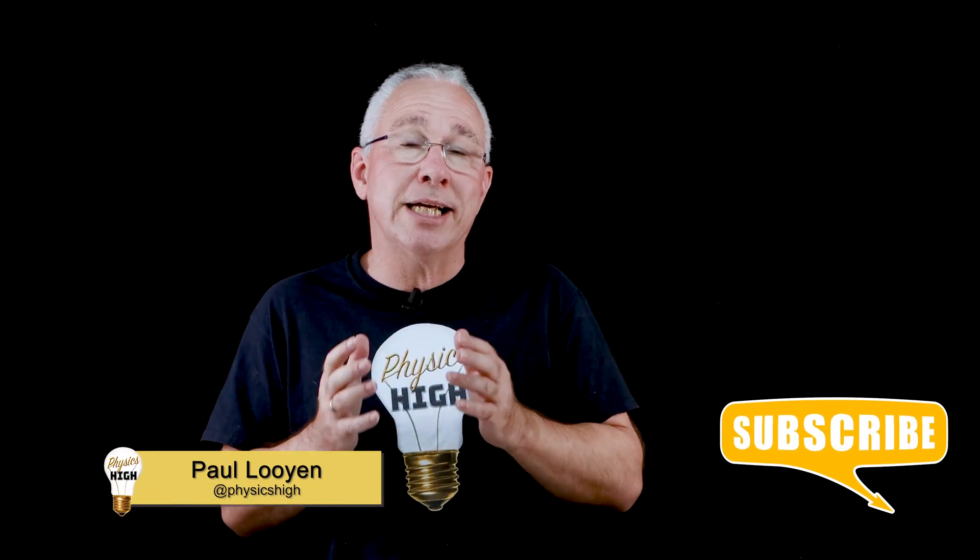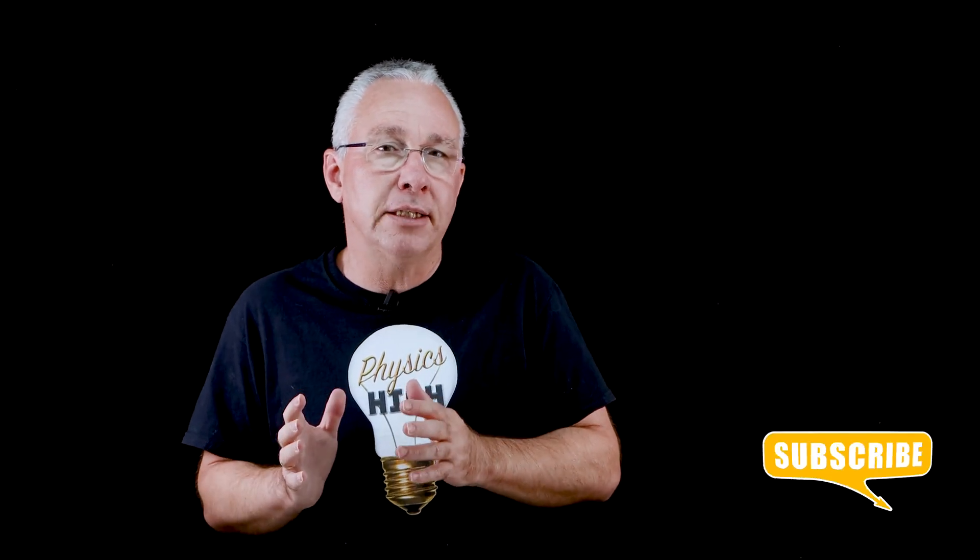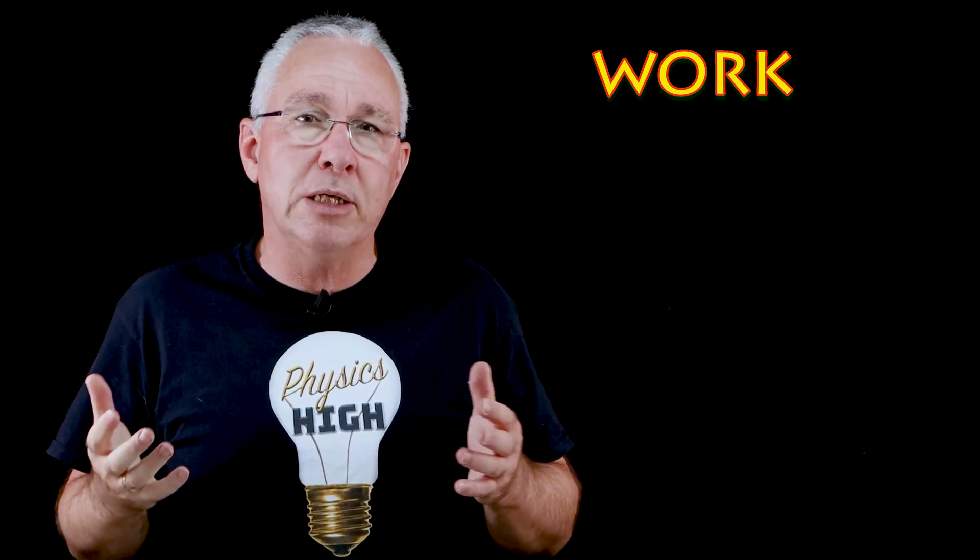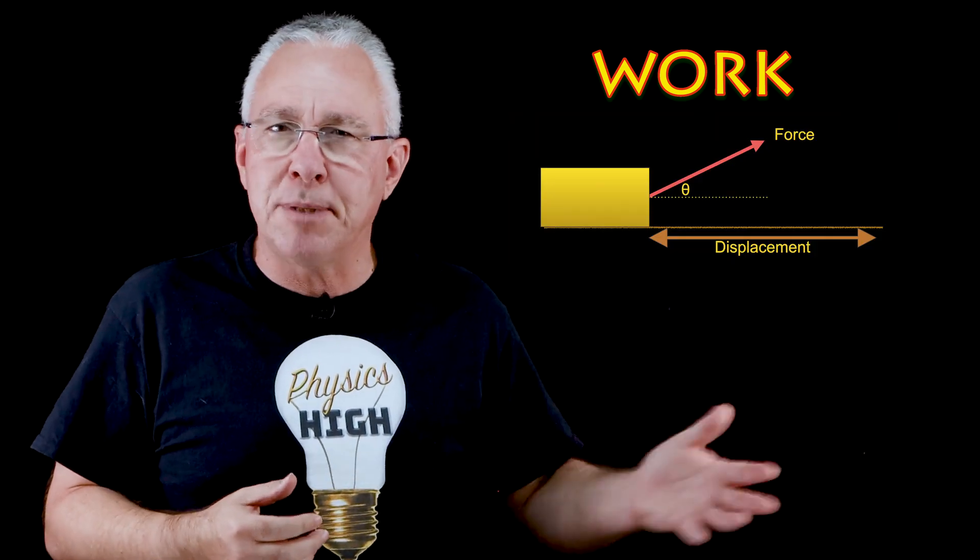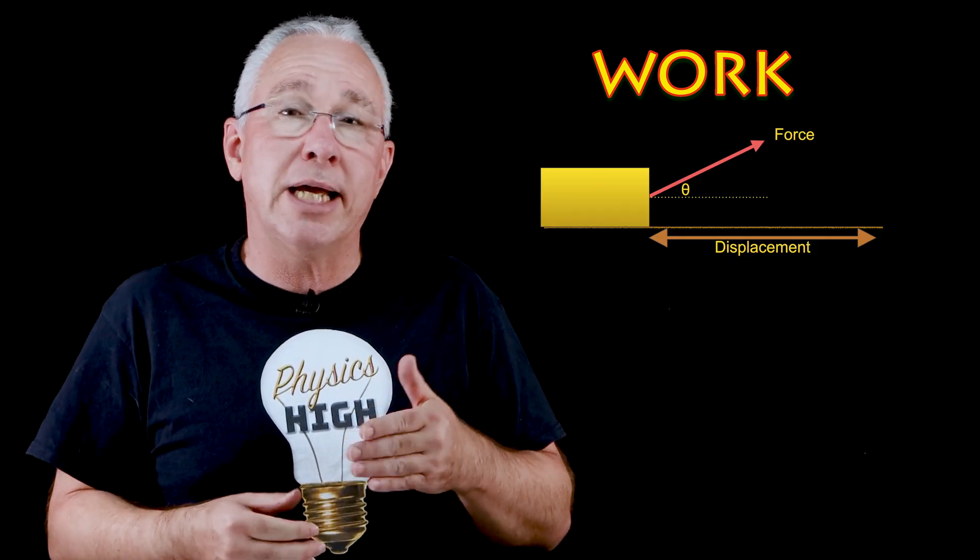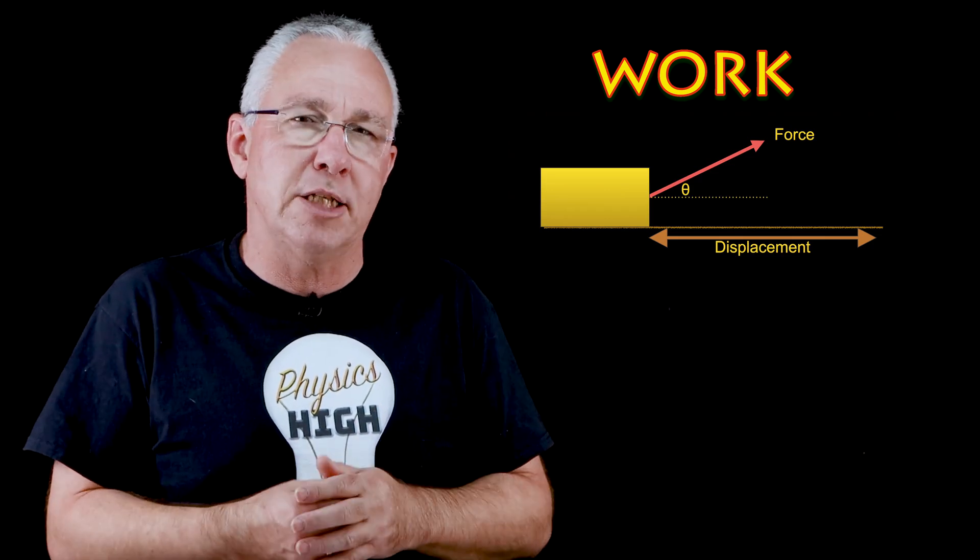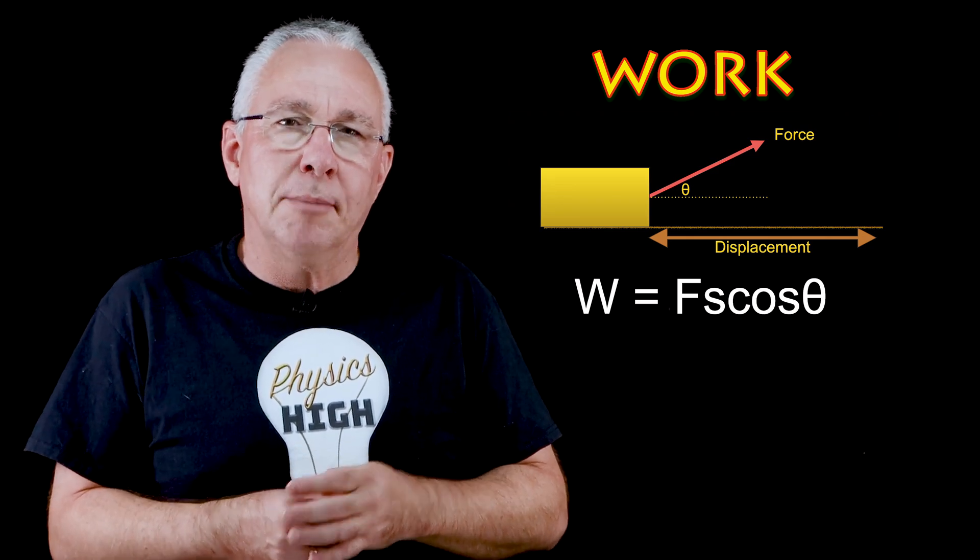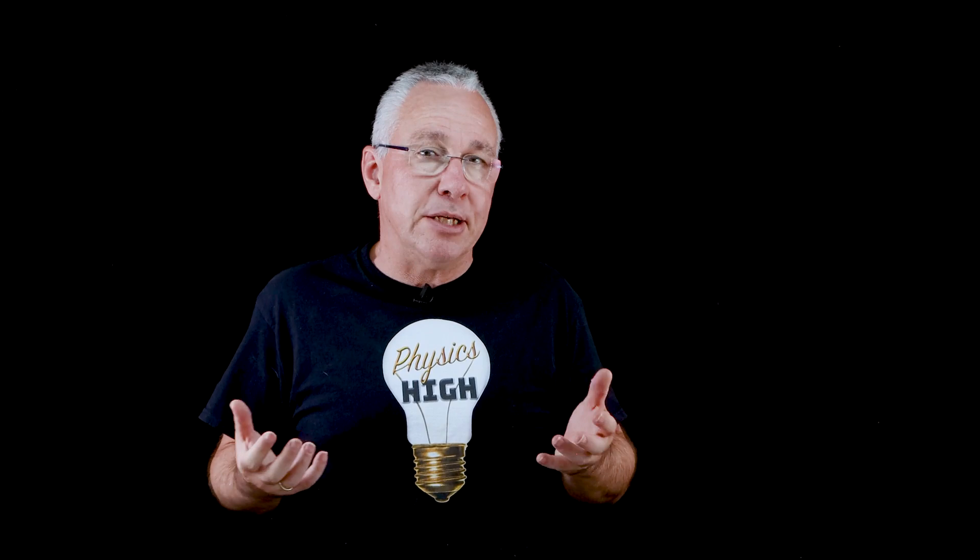The dot product is important in physics because what it allows us to do is work out how much of the first vector contributes to the second vector in the same direction. For example, we might look at the concept of work. In high school, we look at two-dimensional situations and say, how much of the force is contributing to the displacement? So what we do is work out the component that is in the direction of that displacement, and we get work: force times displacement times the cosine of the angle. Things get a little bit more tricky, particularly if the vectors are in three-dimensional space, and this is where the dot product becomes really helpful.